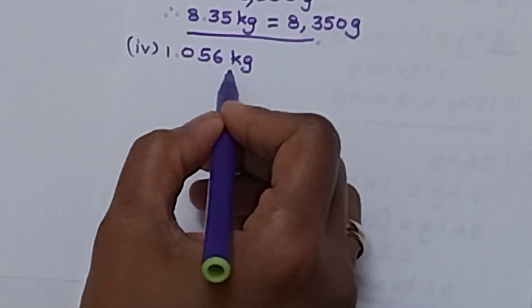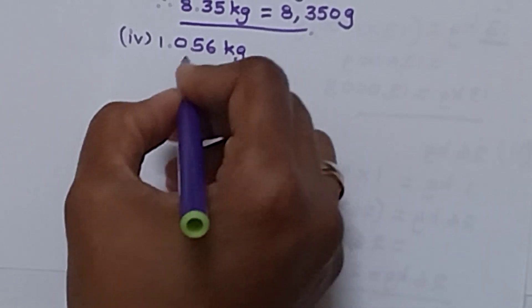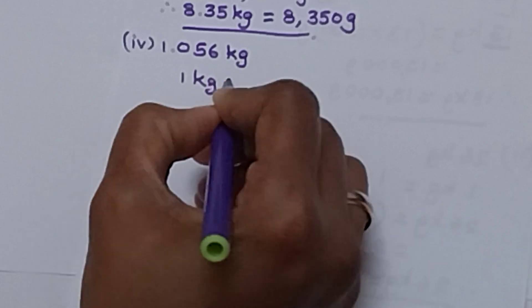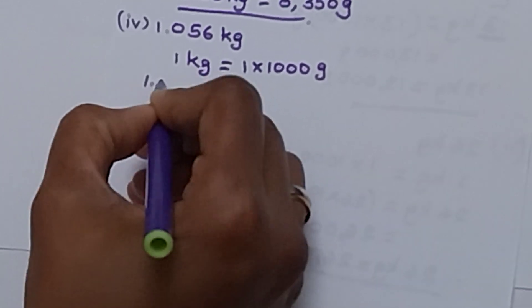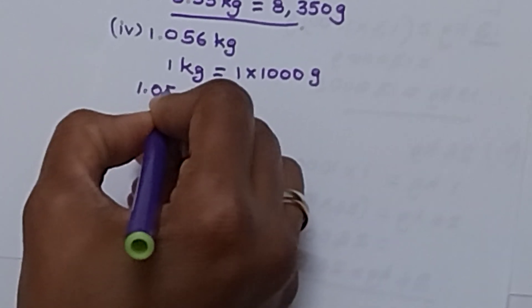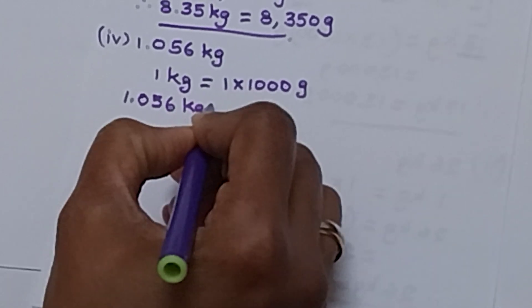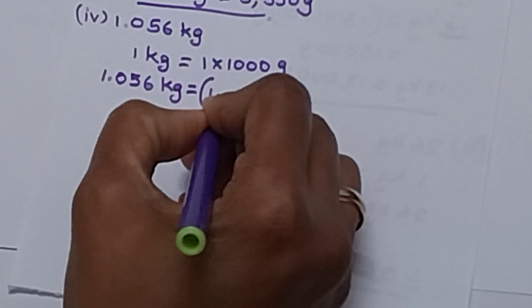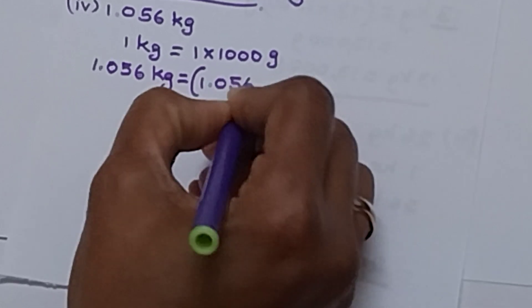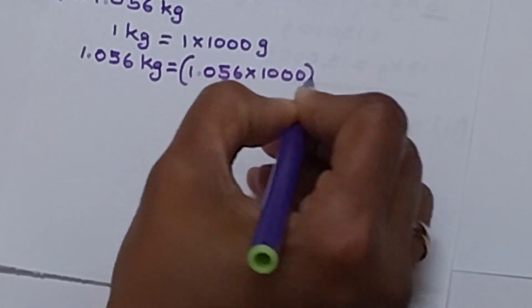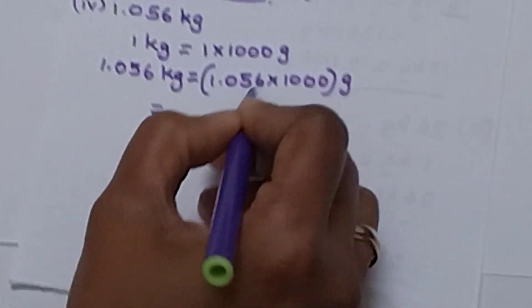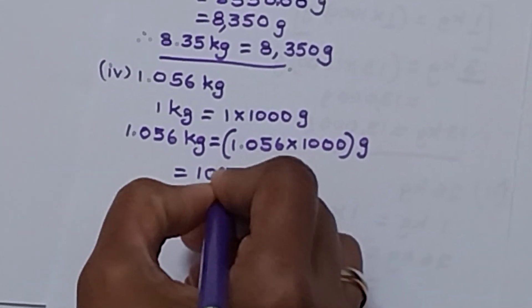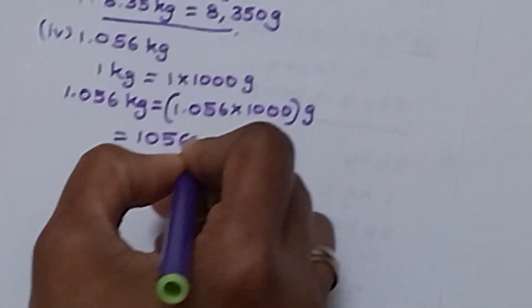The last one is 1.056 kilograms. We write the formula: 1 kilogram equals to 1 into 1000 grams. Our required number is 1.056 kilograms, which we change into grams as 1.056 into 1000 grams. We write the digits as they are: 1, 0, 5, 6, and then 3 zeros.